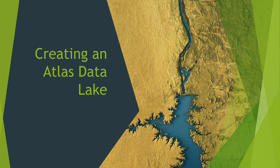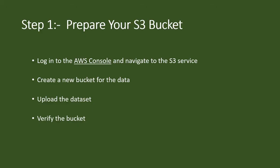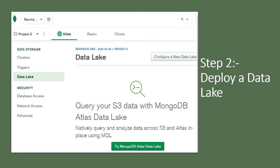Now I'm going to show you how to create the Atlas Data Lake. The first step is to prepare your S3 bucket in AWS. To do that, you need an AWS account, then create an S3 bucket. I'm not going to go through the full S3 bucket configuration, but you need to log into the AWS console, navigate to the S3 service, create a new bucket for the data, and upload your data. You also need to verify the S3 bucket.